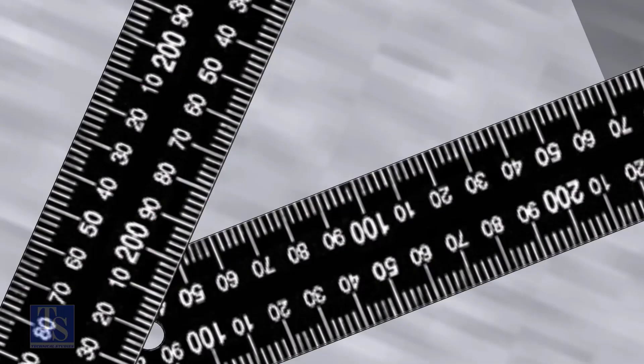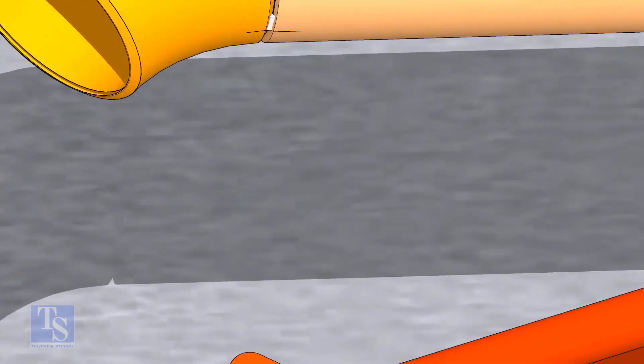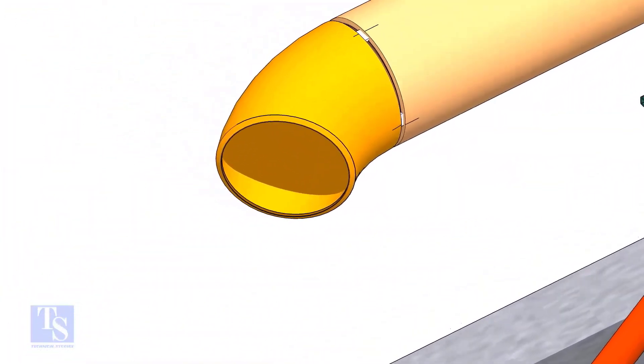Note down the readings. If both readings are the same, it means the elbow face is exactly 45 degrees to the pipe.